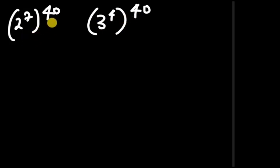So let's concentrate on what's inside the brackets. 2 to the power of 7 is actually 128, and 3 to the power of 4 is actually 81.